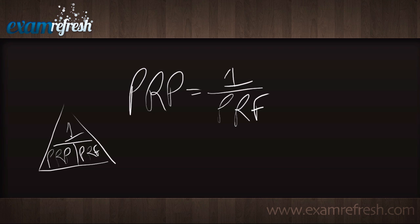If I want to solve for my PRF, what's it going to be? It's going to be 1 over PRP. What if I want to solve for 1? That'll just be PRP times PRF.